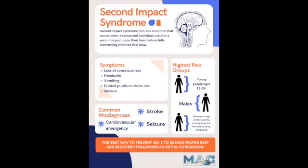CT of the head without contrast is the study of choice initially for evaluating most acute head injuries. MRI is the study of choice if symptoms are prolonged over 1–2 weeks or worsening without explanation by concussion. CT angiography of the head or neck is used if vascular injury is suspected. Management is cognitive and physical rest; some observation is recommended for a minimum of one day. Neurosurgical or neurologic consult is needed if CT shows mass effect, hematomas (epidural, subdural, or cerebral), subarachnoid hemorrhage, depressed skull fracture, or cerebral edema.